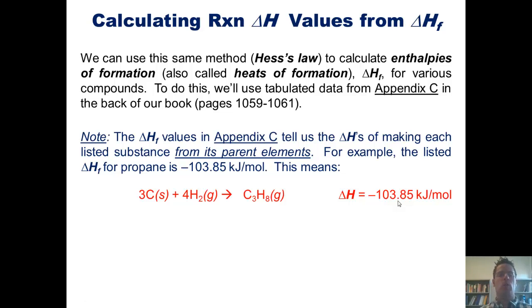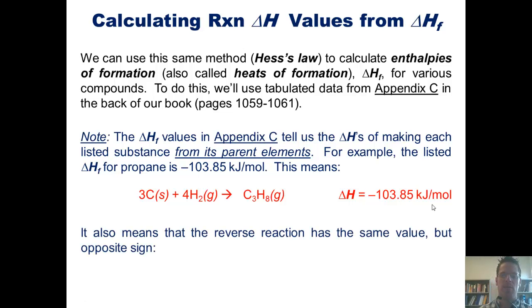This means that when you actually run this reaction, 3 moles of carbon, 4 moles of hydrogen gas to form 1 mole of propane, you will get an exothermic expulsion of energy of 103.85 kJ per mole of propane formed. This also means that the reverse reaction has the same value but the opposite sign. Thus, if I take propane and decompose it back into its parent elements with the equation properly balanced, the enthalpy of decomposition is positive 103.85 kJ per mole.